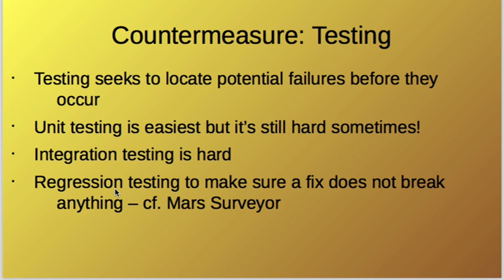Regression testing ensures that when you make a fix, you don't break something else — that is, you don't regress. That's exactly what happened in the Mars surveyor project: something was fixed but it caused a regression. You want to do regression testing all the time, along with unit and integration testing, to cut down on the number of problems.